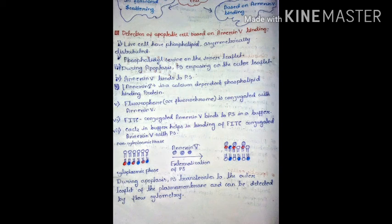Live cells have phospholipids asymmetrically distributed — the glycerophospholipids and sphingophospholipids are asymmetrically distributed on the plasma membrane.